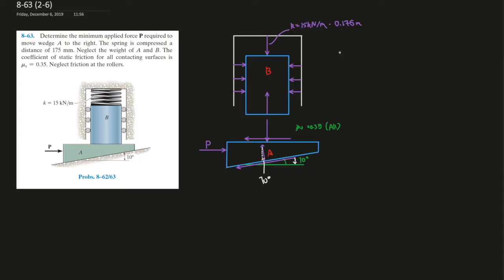So over here, we already have the force. So you put the sum of the forces in the y direction. Well, this whole thing, if you calculate it at 15,000 times 0.175 meters, that should give you 2,625 newtons. This is going down plus the normal force at B.